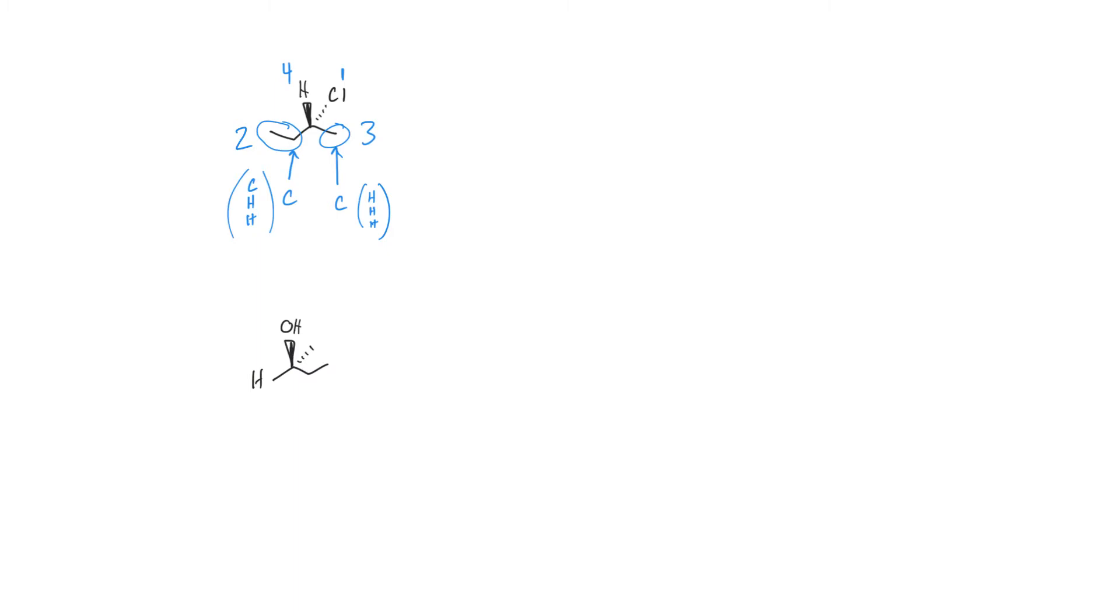Remember from the textbook that we count one, two, three with the fourth priority pointed away from us, and that gives us the absolute configuration. I could do that here, and I'm going to get a leftward rotation. But you may have noticed this hydrogen is not pointed away from us. In fact, it's pointed directly towards us. I could redraw this molecule, or how we practiced drawing enantiomers earlier, if I could just flip it around a vertical line there, I'm not going to change the configuration.